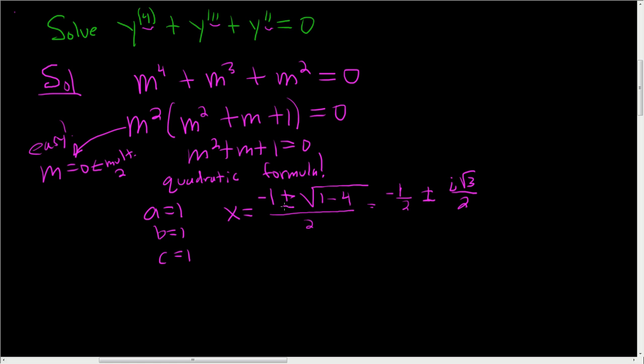So I skipped a lot of steps here. I broke it up. It's negative 1 over 2. That's that. Plus or minus, this is the square root of negative 3. That gives you i square root of 3, and then it's divided by 2.